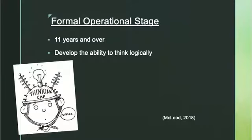Lastly, the formal operational stage begins at approximately age 11 and lasts into adulthood. During this time, they are able to exercise abstract logic and reasoning. Strategy and planning are now possible.